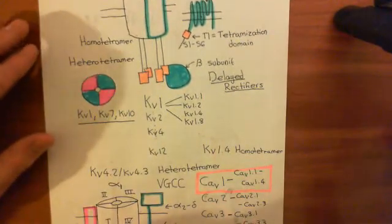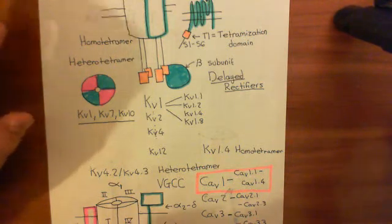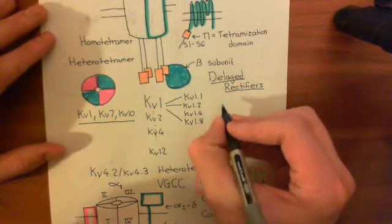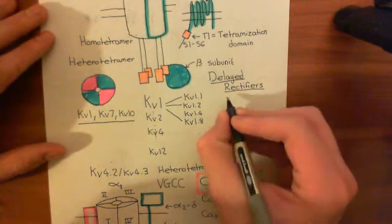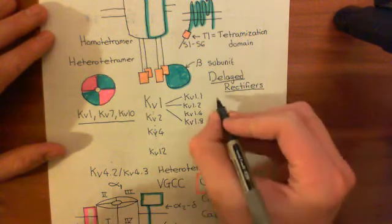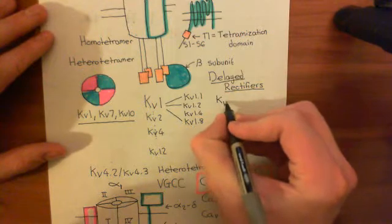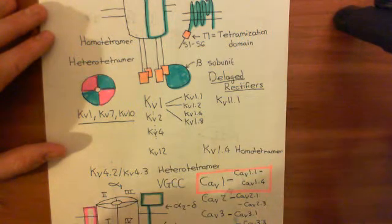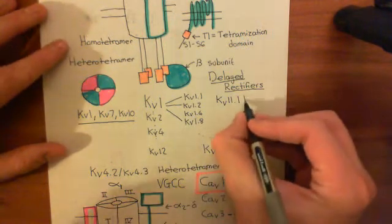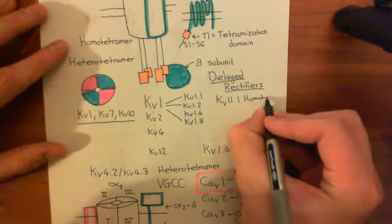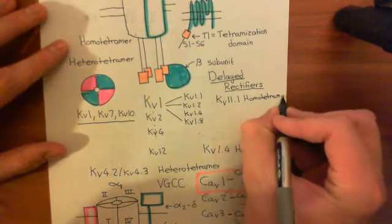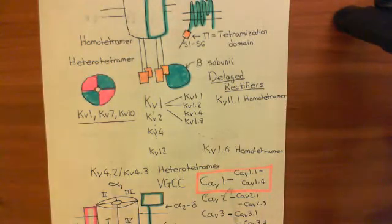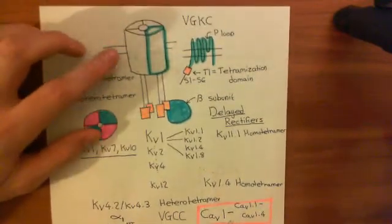These are the ones that are famous because if you knock them out, you generally get long QT syndrome. The first two are easy, and the last one is a bit more difficult. So, the first one is KV11.1. This is a gene in the 11th family of voltage-gated potassium channel alpha subunits, and it's a homo tetramer. You take this gene, use it four times to make four proteins, and stick those four identical alpha subunits together to make the pore-forming unit of your voltage-gated potassium channel.